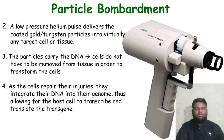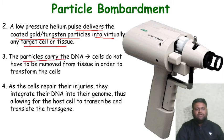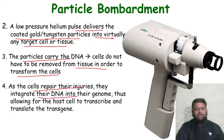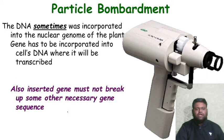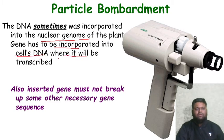A low-pressure helium pulse delivers coated gold and tungsten particles into virtually any target cell or tissue, and the particles carry the DNA. Cells do not have to be removed from the tissue in order to be transformed. As cells repair their injuries, they integrate the DNA into the genome, allowing the host cell to transcribe and translate the gene. The DNA is sometimes incorporated into the nuclear genome of the plant, where it will be transcribed. The inserted gene must not disrupt any other necessary gene sequence.